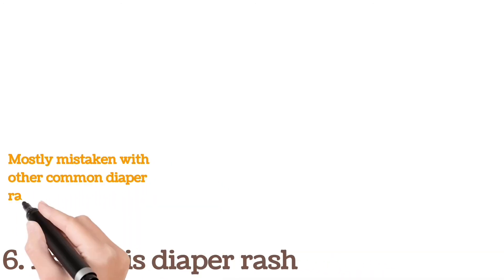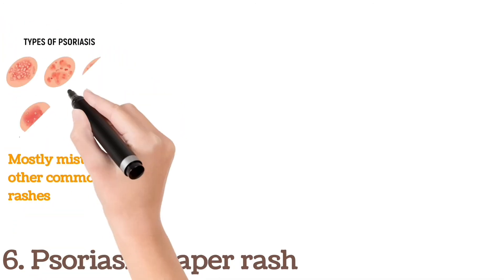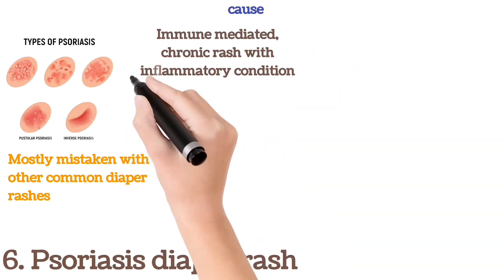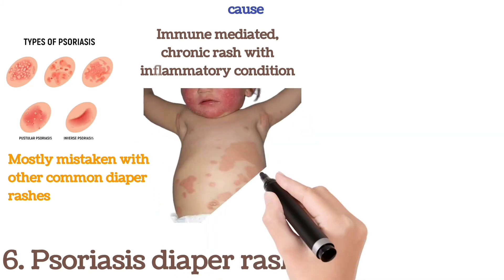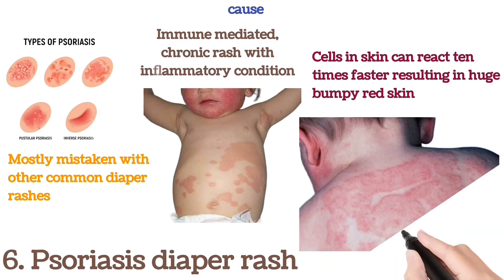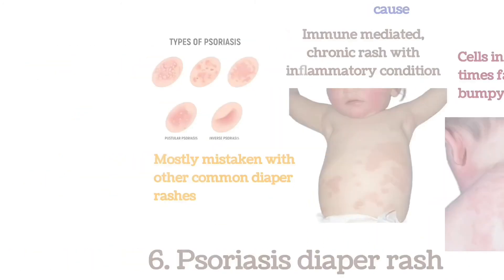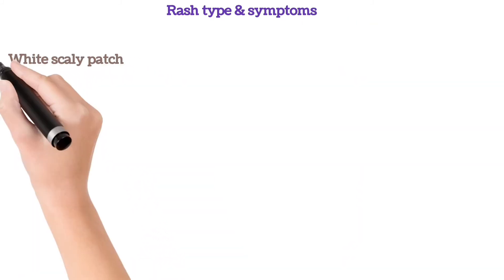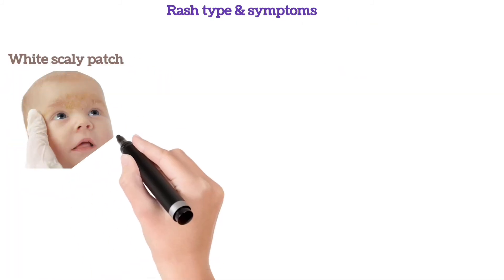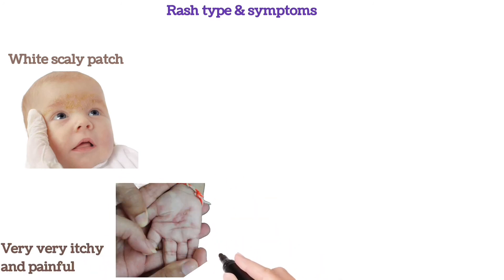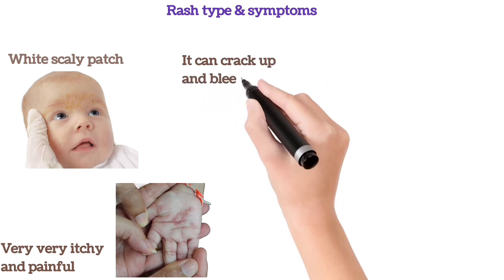Psoriasis diaper rash is mostly mistaken with other common diaper rashes. Causes: immune-mediated chronic rash with an inflammatory condition where skin cells can react ten times faster, resulting in huge bumpy red skin. Type and symptoms: white scaly patches, very itchy and painful, it can crack and bleed as well.